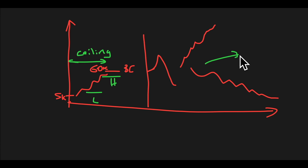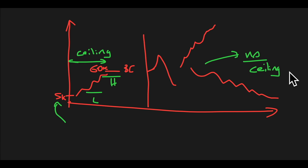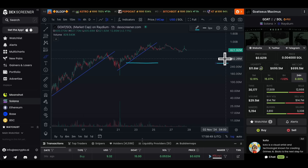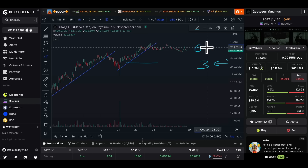That GOAT coin I showed you actually started at literally 5,000 and is now at 600 million — it made several millionaires and many six-figure earners. You can buy at any market cap. There are people who bought 'late' at 300 million, put in $100, and sold at 600 million for $200 — a 2X. You need to understand basic maths for any of this meme coin stuff to make sense.